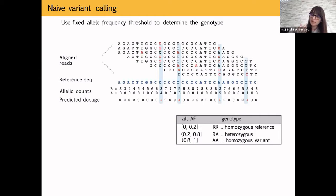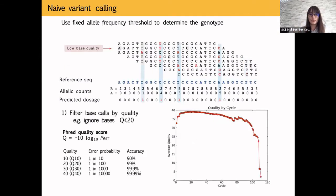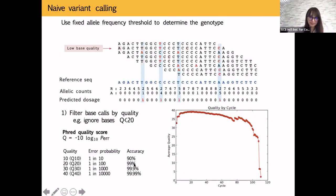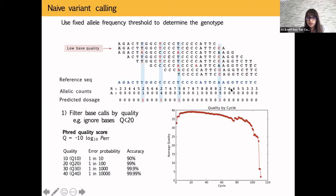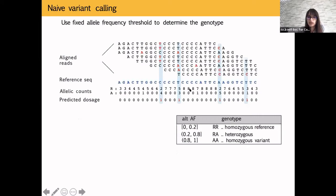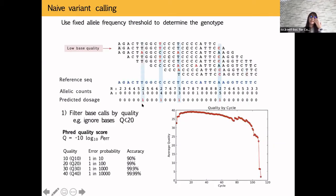However, you can have low-quality bases — recall the graph where base quality diminishes with cycle. So we can apply filtering: ignore all bases with quality less than 20 (Phred quality score). When we do this, some calls change because we're excluding certain low-quality bases from the calculation. We can also filter reads that map with quality zero, meaning they map to multiple places in the genome, as they don't give high-quality information about a site.